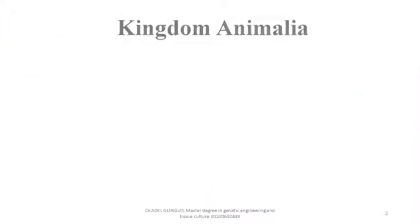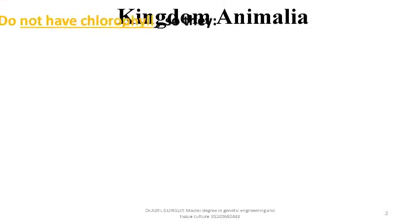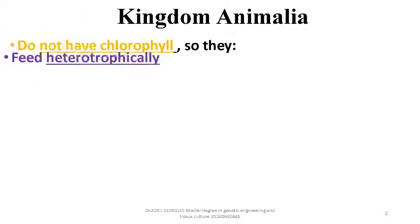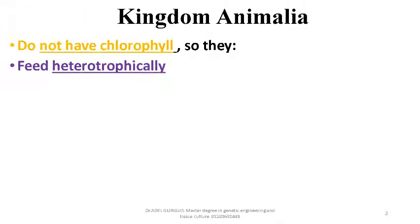Animals do not have chlorophyll, so they feed heterotrophically — that means they depend on others. For example, herbivores feed on grasses, or carnivores when they feed on prey.